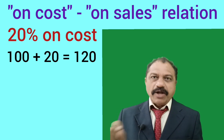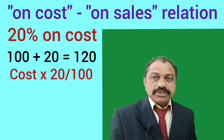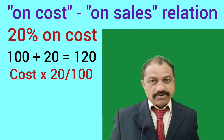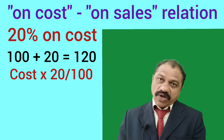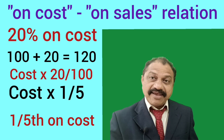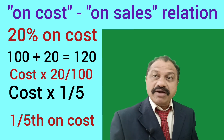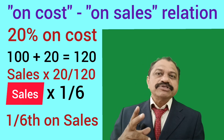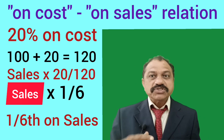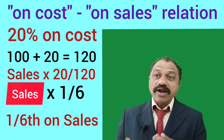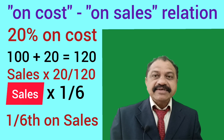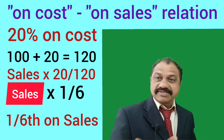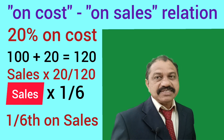Point number 1: Profit on cost is equal to Cost into 20 divided by 100, that is Cost into 1 divided by 5. It can be stated as one-fifth on cost. Point number 2: Profit on sales is equal to Sales into 20 divided by 120, that is Sales into 1 divided by 6. It can be stated as one-sixth on sales.